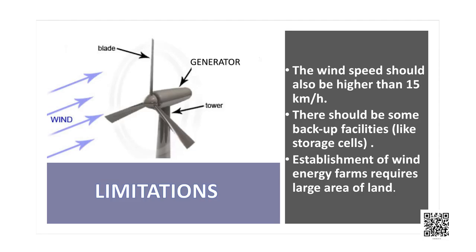But, as with all resources, there are many limitations in harnessing wind energy. Wind energy farms can be established only at places where wind blows for a greater part of the year. The wind speed should also be higher than 15 kilometers per hour to maintain the required speed of the turbine. There should be backup facilities like storage cells to take care of energy needs during periods when there is no wind.